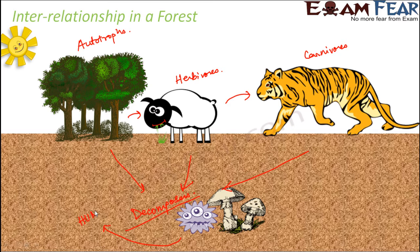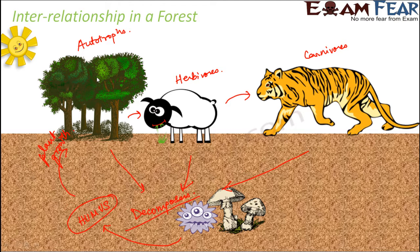Humus improves the quality and fertility of the soil, and this soil in turn helps in further growth of plants. So you see it is like a cycle — everybody is interdependent on one another. The tiger is dependent on the goat, the goat is dependent on the plant, and even the plant is dependent on the tiger to some extent, because from the tiger's remains humus is formed and that humus is utilized for plant growth. All of them are dependent on each other for their food and survival.